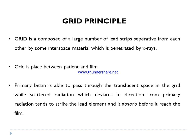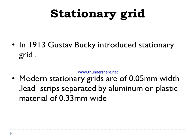In the case of scattered radiation, which deviates in direction from the primary radiation, it strikes the lead elements and is absorbed before reaching the film. This is a stationary grid. In 1930, Dr. Gustav Bucky introduced the stationary grid. Modern grids have lead strips of 0.05 mm width, separated by interspace materials. The interspace material used is aluminum or plastic, which is 0.3 mm wide.